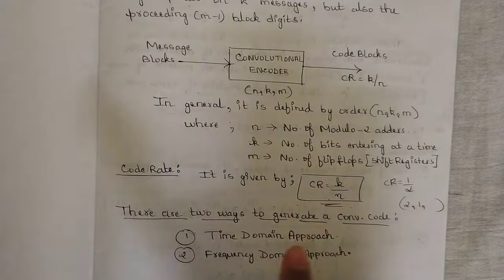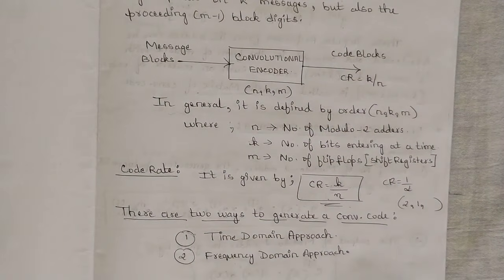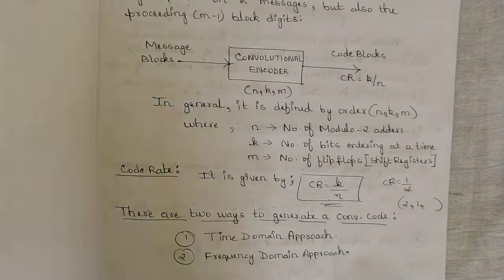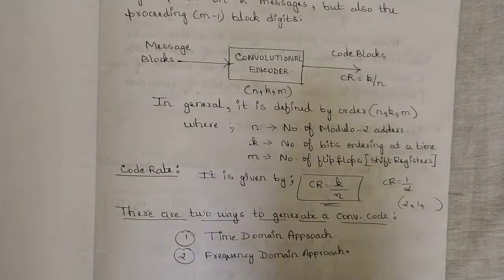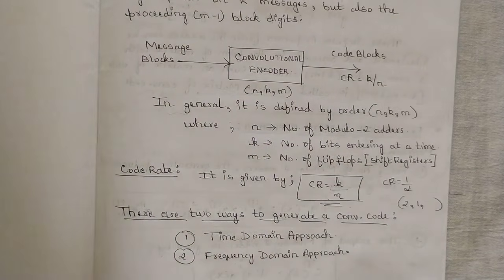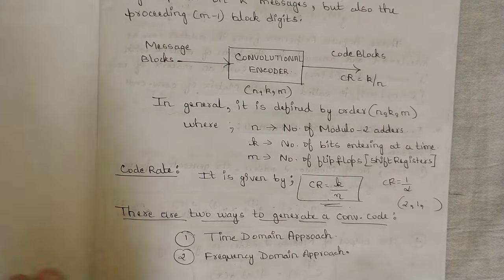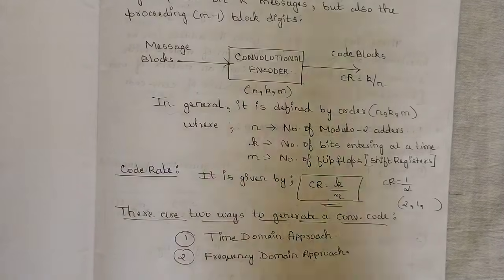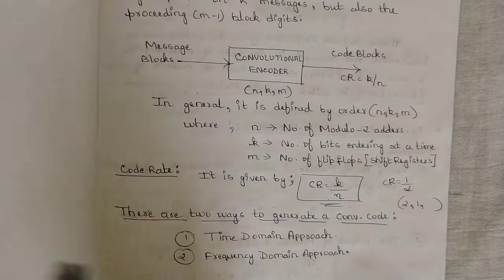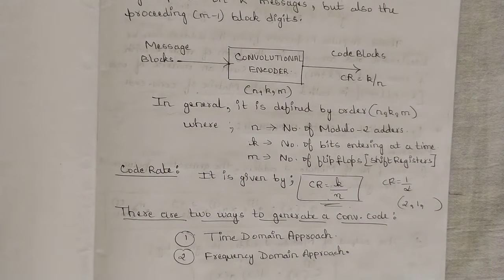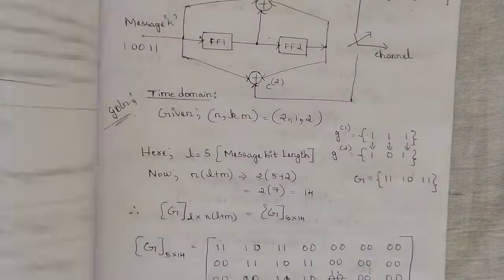Now, there are two ways to generate a convolutional code. One is called the time domain approach, where we do the method of convolution. The other is the frequency domain approach, where we do normal multiplication. Note this is the reverse of DSP - in DSP, in the time domain we do multiplication and in the frequency domain we do convolution, whereas here in the time domain we do convolution and in the frequency domain we do multiplication.